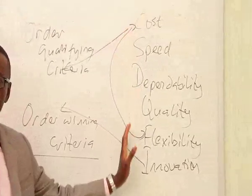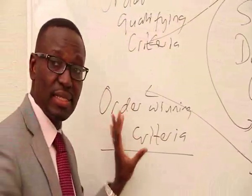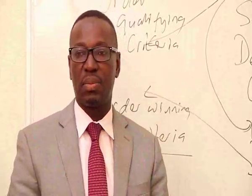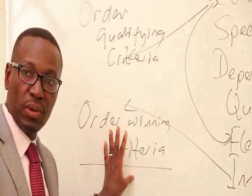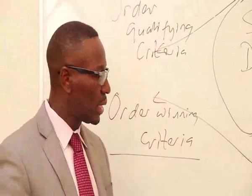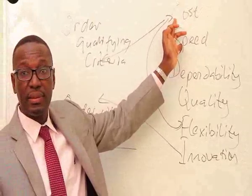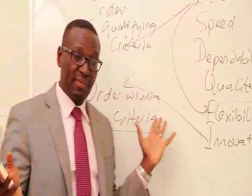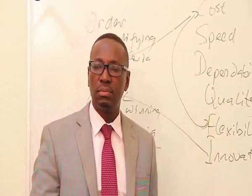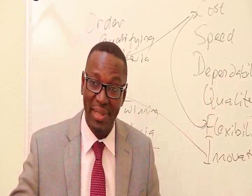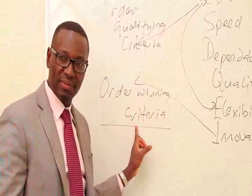So you ask yourself: how can these operations objectives link to order qualifying criteria and order winning criteria? Order winning criteria are things that if you offer customers, you delight them — sometimes customers don't even expect them. When we look at our operations objectives, cost for airlines could be an order winner. If an airline comes and says Lagos to London return for $200, a lot of people will go for that airline. That cost or price becomes a competitive winning factor.